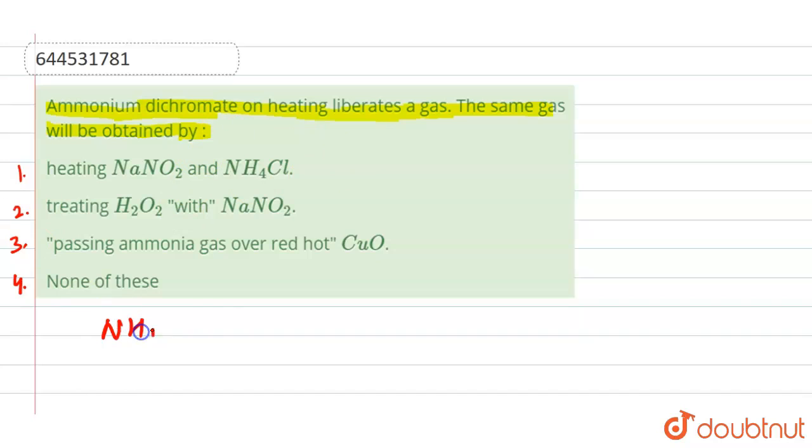So here we have (NH4)2Cr2O7, and here when we heat this, we have N2 plus 4H2O and we have the chromic oxide, that is Cr2O3. So it means here we have the gas that is N2 gas, right? So we want to see in which option we will have the evolution of the N2 gas.